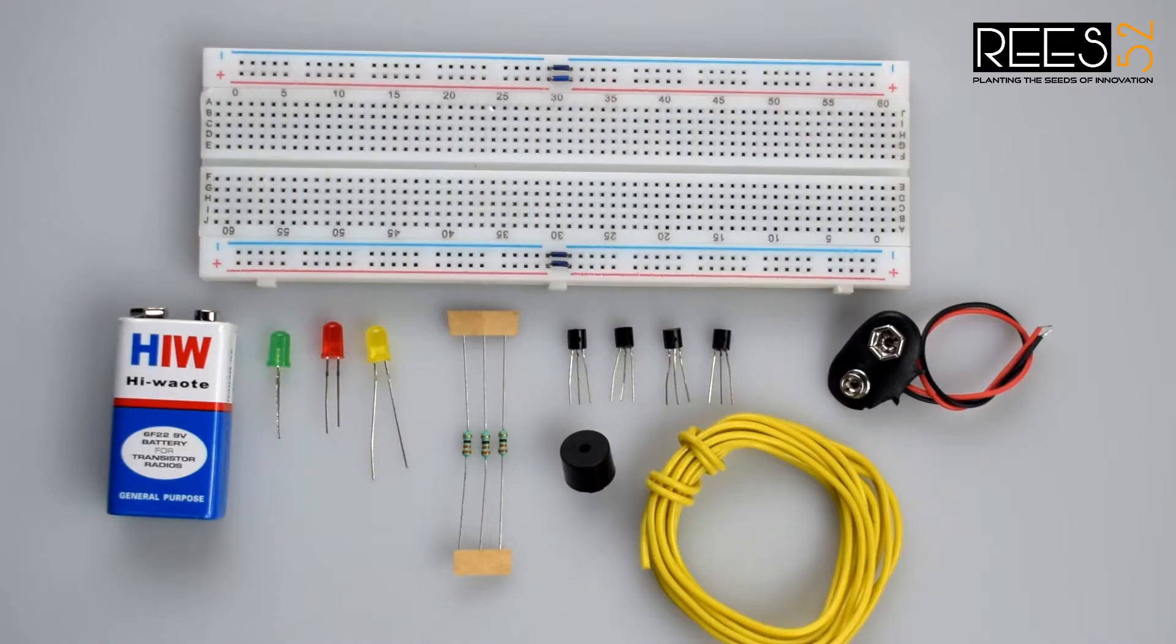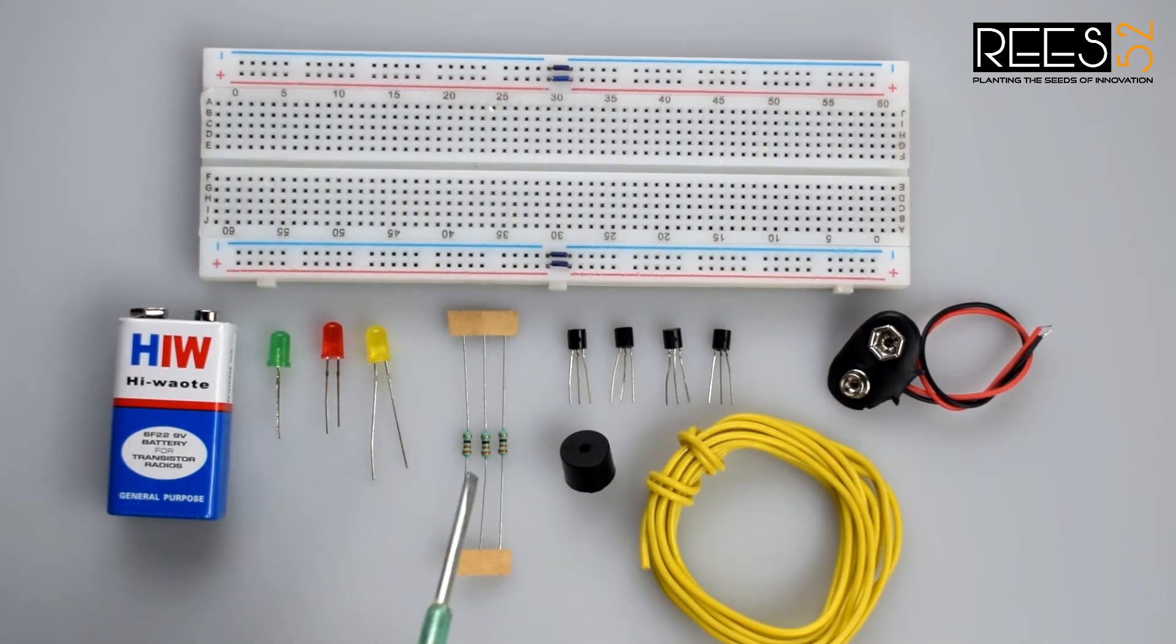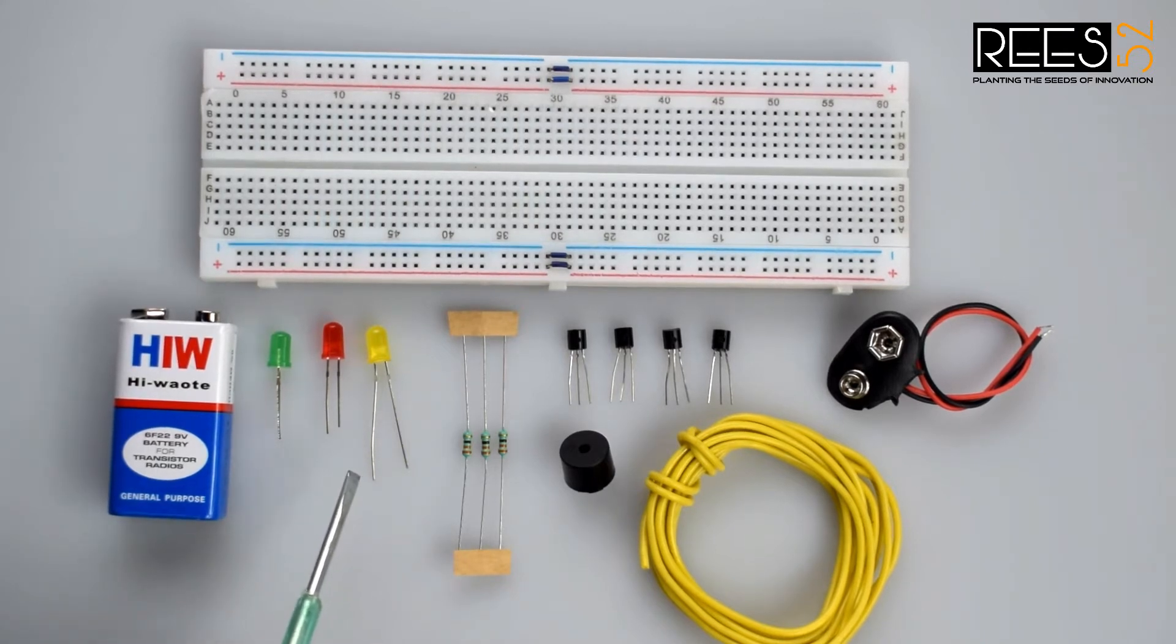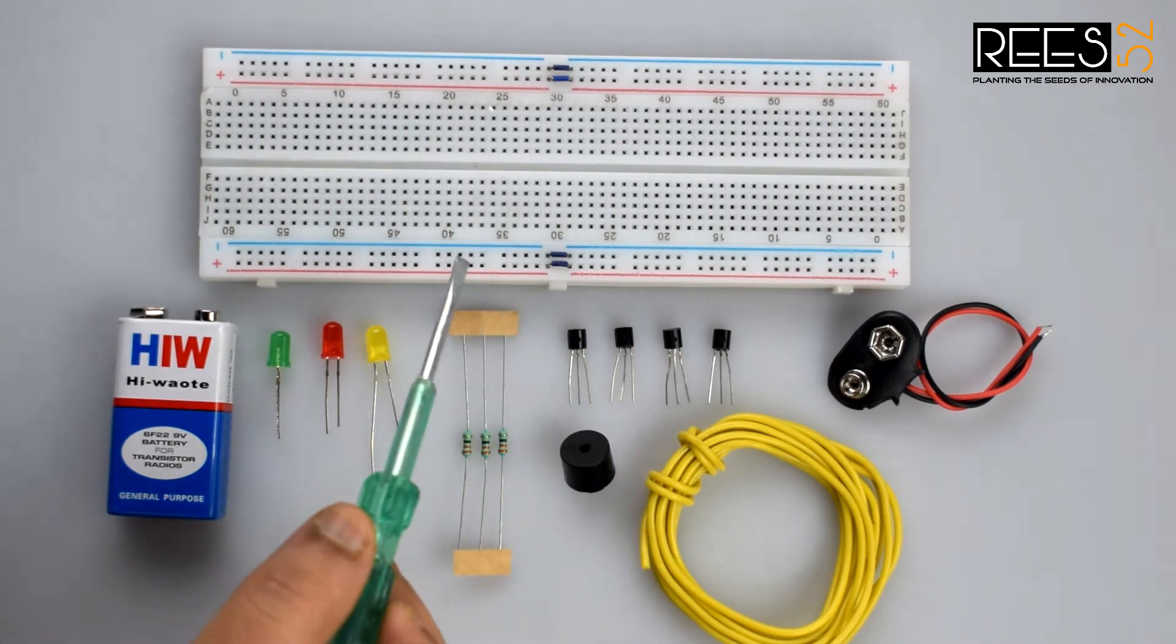To make this project we need four BC547 NPN transistor, three 330 ohm resistor, three LEDs, a beeper buzzer, hookup wire - you can use jumper wire also - and the breadboard with 9 volt battery and the snapper.